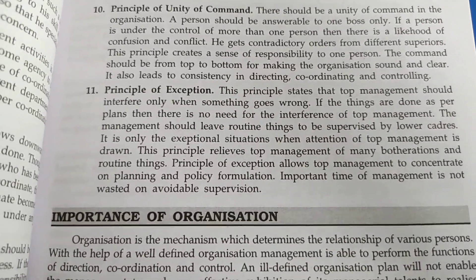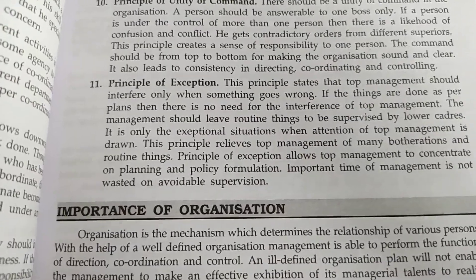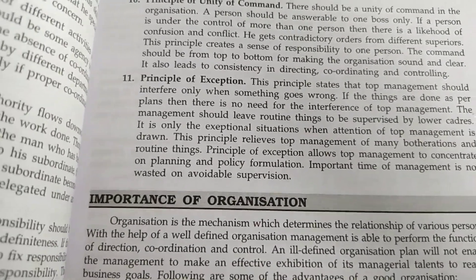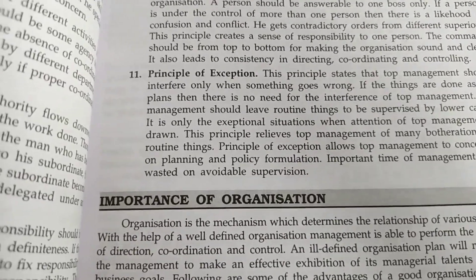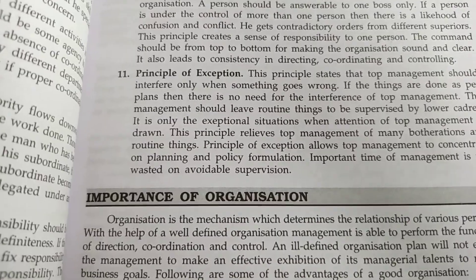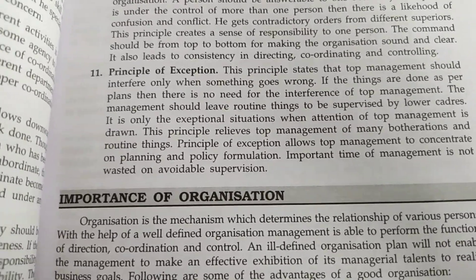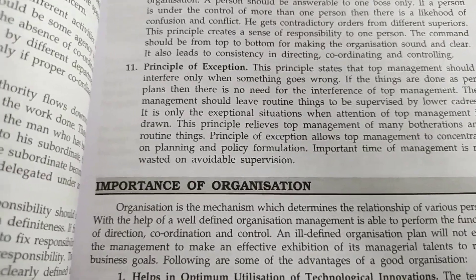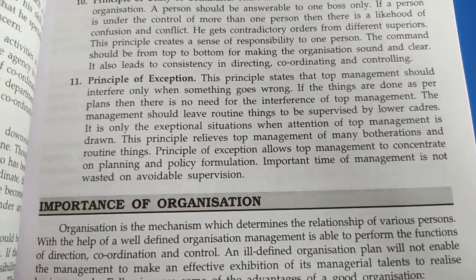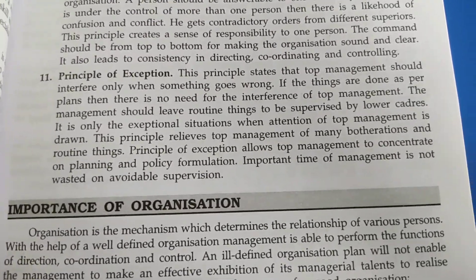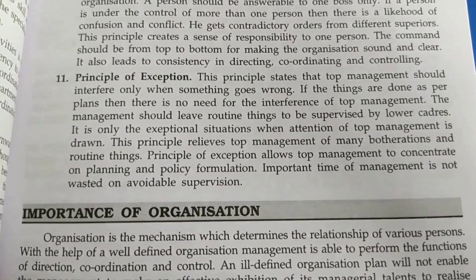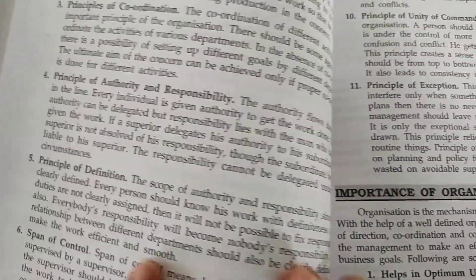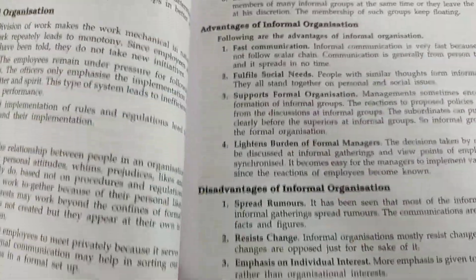Next is the principle of exception. The top management should not involve themselves in each and everything. Only when there are major problems in the organization should the top management get involved. For small issues, the departmental managers themselves can handle and control things. The top management should only interfere in major situations. These are the 11 principles of organization, and it is a very important question. So regularly maintain your notes.